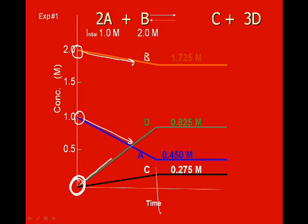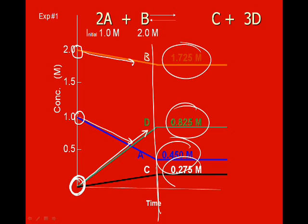D's slope climbs much more steeply because it has a coefficient of 3. At this point right here, something happens to our system—it comes to equilibrium. At this time, whatever this time is, that's when our system comes to equilibrium. The concentrations that you see here are the concentrations of the system at equilibrium.